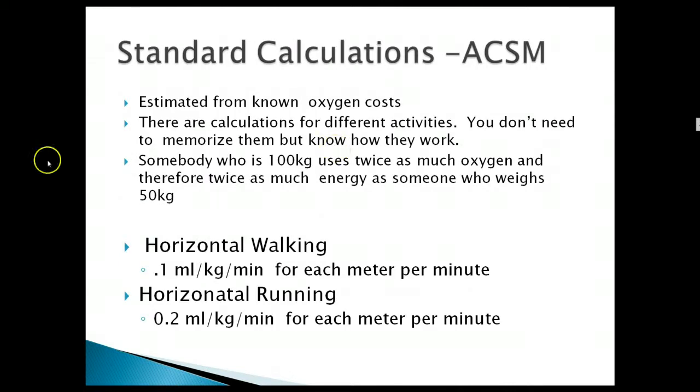There are some other things that we can do. We can also estimate energy from known oxygen cost. So you don't need to memorize these different activities, but you just need to understand them and know how they work. For example, somebody who's 100 kilograms uses twice as much oxygen and therefore twice as much energy as someone who weighs 50 kilograms. That's at rest, it's also when you're moving. So let's say you're walking and you walk a mile. In addition to their one MET they use just for existing, just for being alive, when you're horizontally walking, you use 0.1 milliliters per kilogram per minute for each meter per minute. So it depends on your speed. Speed measures in meters per minute. That's the horizontal part, the flat part.